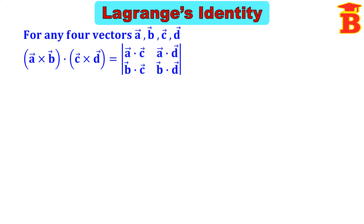That is, for any four vectors A, B, C, D, we have the formula: A vector cross B vector, dot C vector cross D vector, equal to the determinant of A·C, A·D in the first row and B·C, B·D in the second row. This is the dot product of four vectors formula.